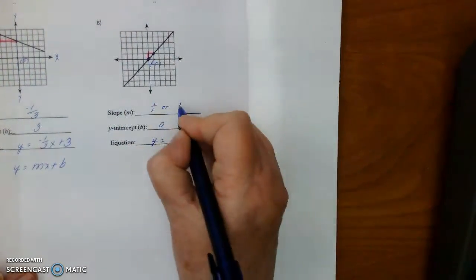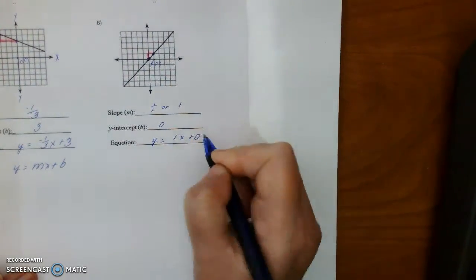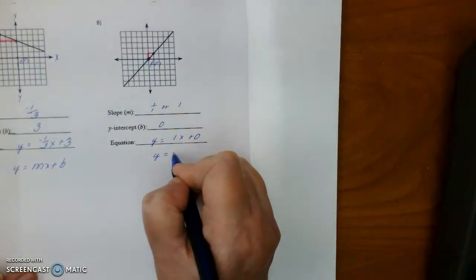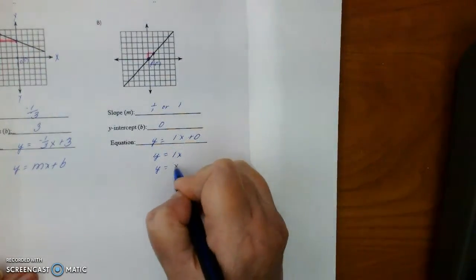So we have Y equals slope is M, 1, X plus 0, or you could just do Y equals 1, X, or Y equals X.